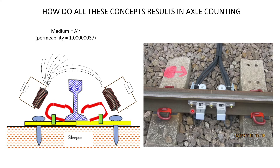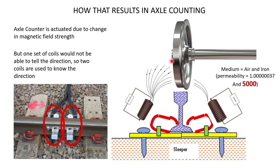Now let's look at an actual axle counter. Inside the axle counter there are basically two coils: one is the transmitter coil and one is the receiver coil, with magnetic field lines going from one to the other. When there is no wheel, the medium between those two coils is air. But as soon as a wheel passes over the axle counter, the medium changes — air has a low permeability, while iron has a permeability of around 5000. Suddenly you have a material that is super-conductive compared to air, meaning the magnetic field lines get much more support going from transmitter to receiver, and the magnetic coupling becomes the highest. That's exactly what the axle counter records — the difference between the normal scenario with just air, and when a wheel passes over.